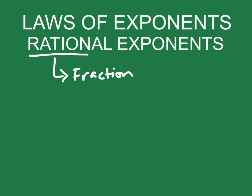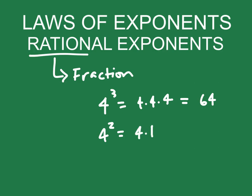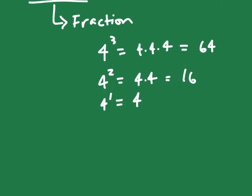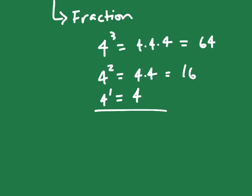I'm going to use four as an example. Four cubed means we're doing four times four times four, and that's going to give us 64. Four squared means we're doing four times four, and that's going to give us 16. Four to the first power is going to give us four. Four to the zero power — we know from our rules that that's going to be equal to one.